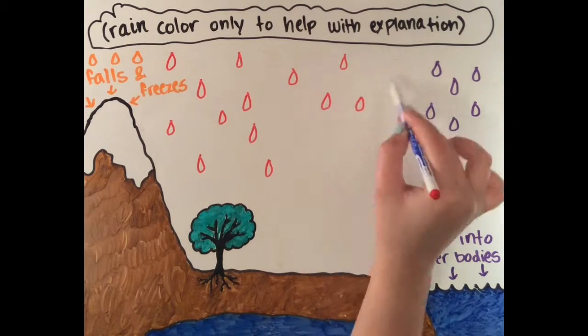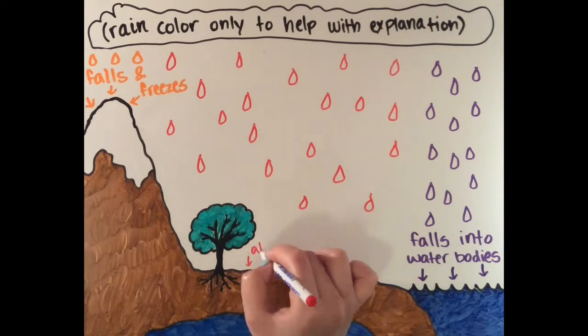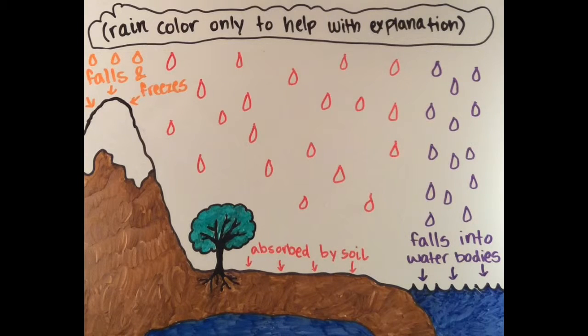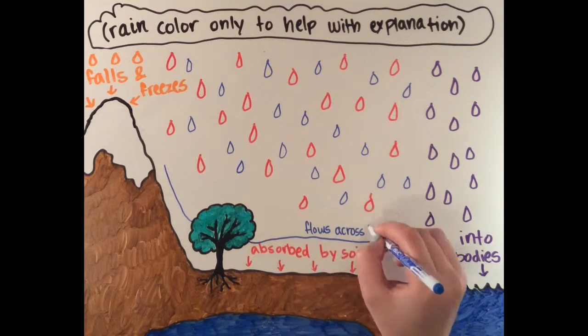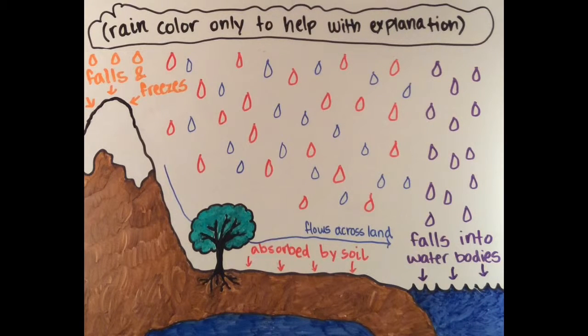Sometimes this precipitation falls on land, and when it does, some of that water flows through the soil, where plants can absorb it through their roots, or it reaches subsurface stores of groundwater, while the rest of it will end up flowing across the land until it reaches a body of water. Water like this that flows across the earth's surface is known as runoff.